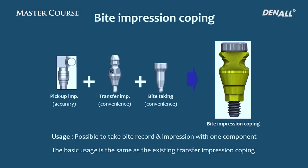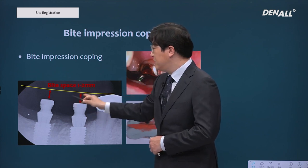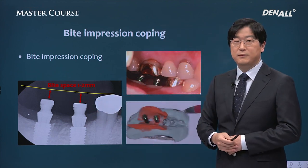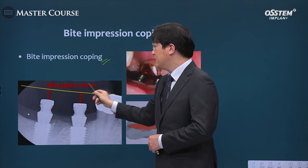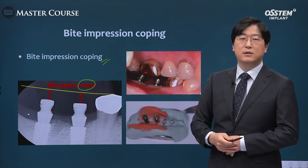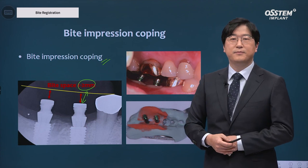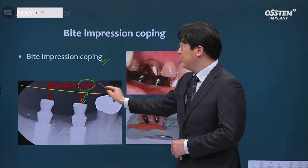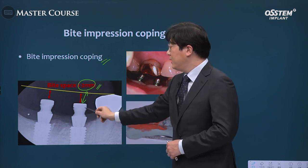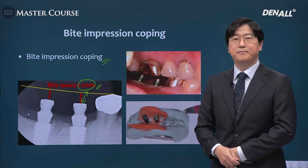Bite impression copings have bite-taking and impression-taking functions together in one unit. Over the implants, bite impression copings are connected, and bites and impressions are taken simultaneously — it is simple to use. At this time, the bite space should be 1–2 mm after connecting bite impression copings. If the bite material gets too thick it is prone to errors, so the bite space should be adjusted to 1–2 mm by adjusting the height of the bite impression copings. The bite is taken followed by impression taking.